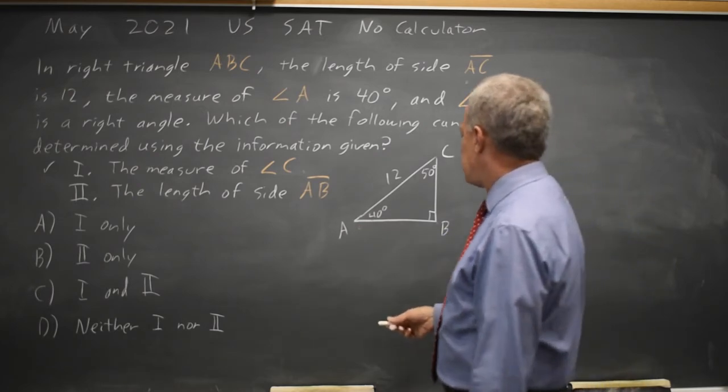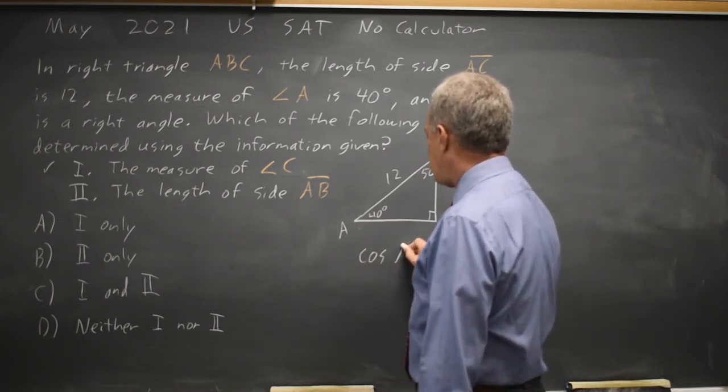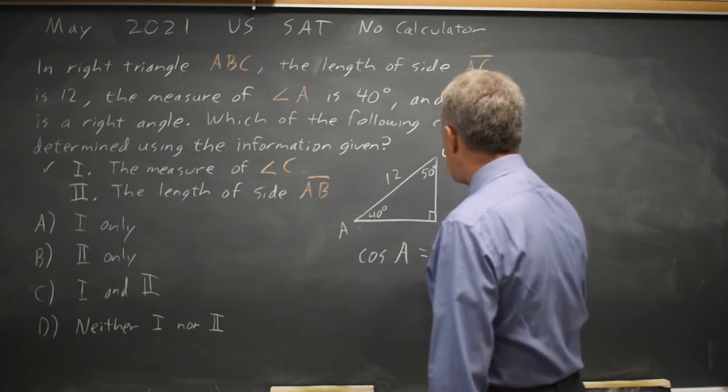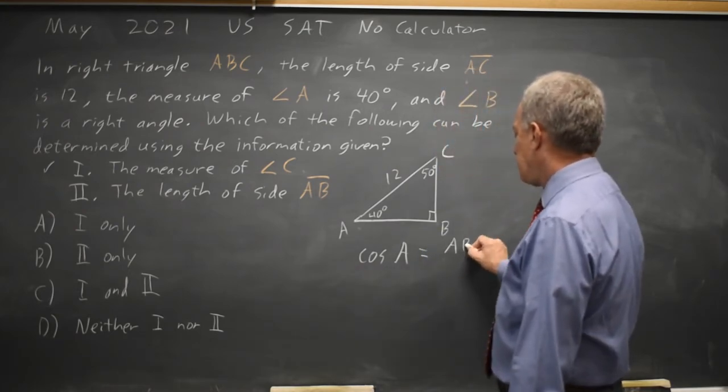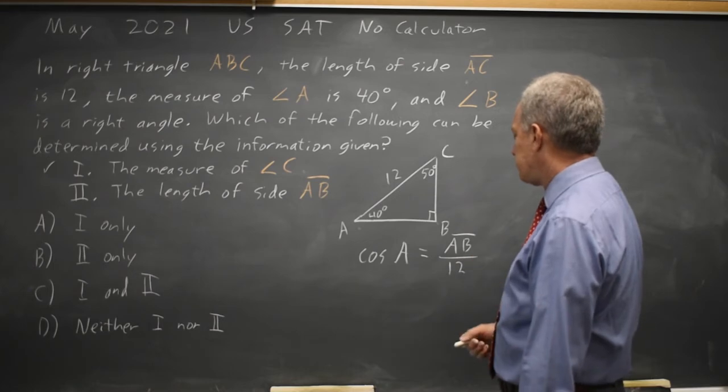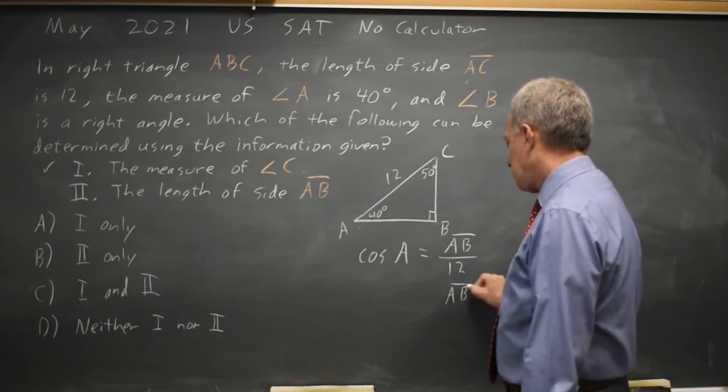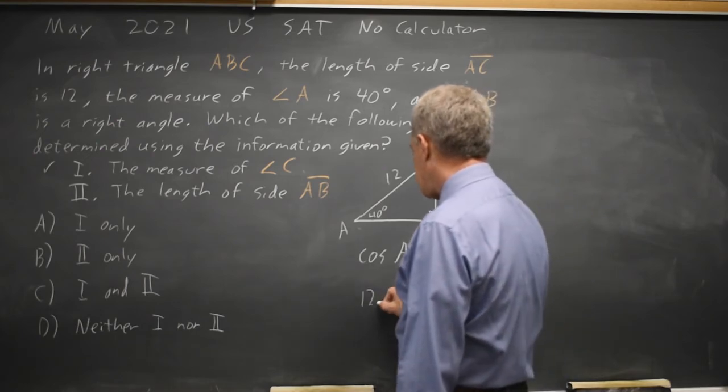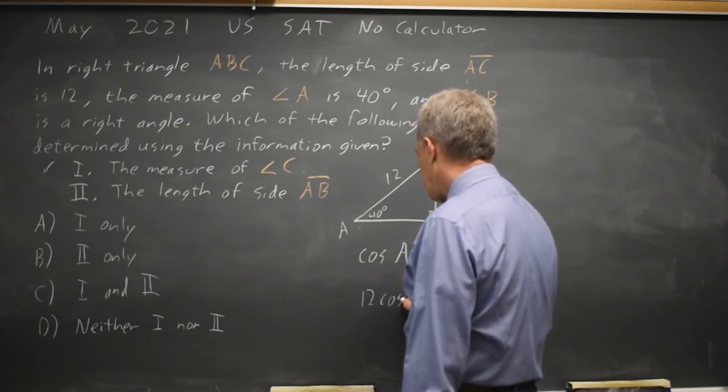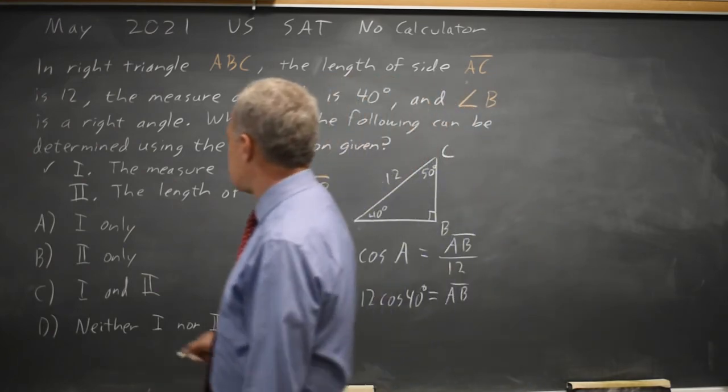Trigonometry tells us that the cosine of angle A is equal to the adjacent side AB over the hypotenuse 12. So side AB is equal to 12 times the cosine of 40 degrees, and we just determined the length of side AB,